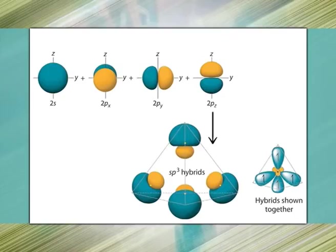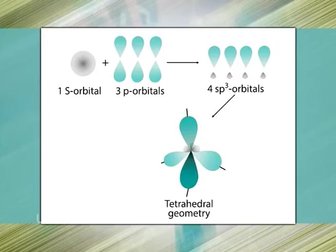In sp³ hybridization, one s orbital combines with three p orbitals — px, py, and pz — to form four new hybrid orbitals. The direction of orbitals and the center of mass are determined by the specific contributions of the p orbitals and s orbital. The characteristic angle between hybrid orbitals in sp³ configuration is 109.5 degrees.